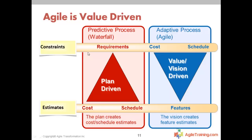Traditional processes like waterfall incorrectly assume you can fix your requirements and scope — that's what plans and agreements are built on. But when you fix scope, what ends up changing is cost or schedule. Agile says: instead of being so plan-driven and fixing requirements, just tell me your cost or your schedule. If you have a specific budget or a drop-dead date, tell me that, along with high-level requirements, and we'll constantly focus on the highest-value requirements to deliver.